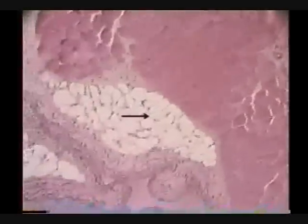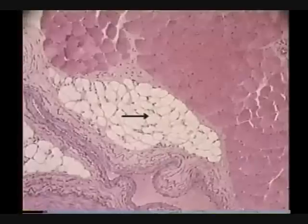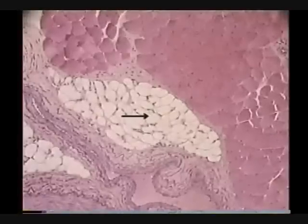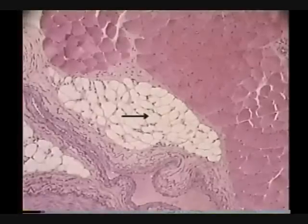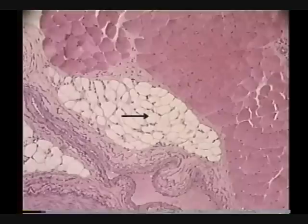Look at there — identify the tissue occupied by the arrow. You better not miss this one. The tissue is adipose. Where do we find adipose? Everywhere.